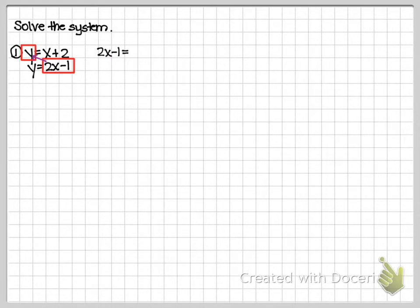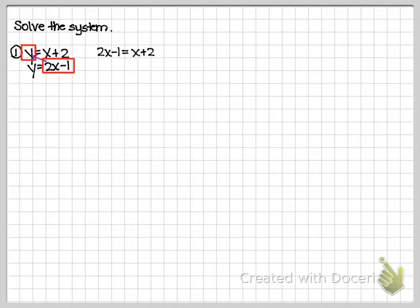I'm going to take the Y out in the first equation and put 2x minus 1 in its place, then continue writing the first equation with the x plus 2. All I did was replace — I got rid of this Y and put the 2x minus 1 into its location, swapping the red boxes. How do I know if my substitution is successful? Look at your new equation: 2x minus 1 equals x plus 2. You should only have one variable — not X's and Y's, just X's or Y's, not both.